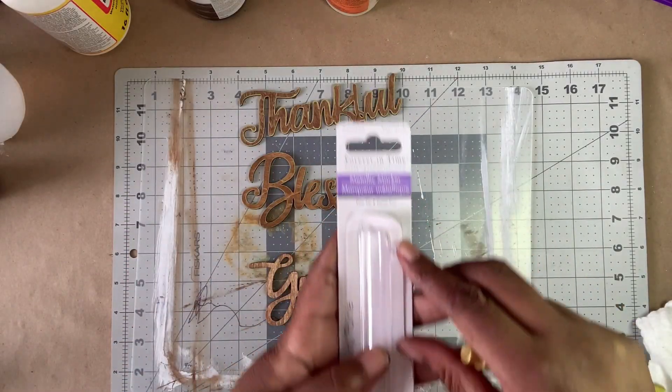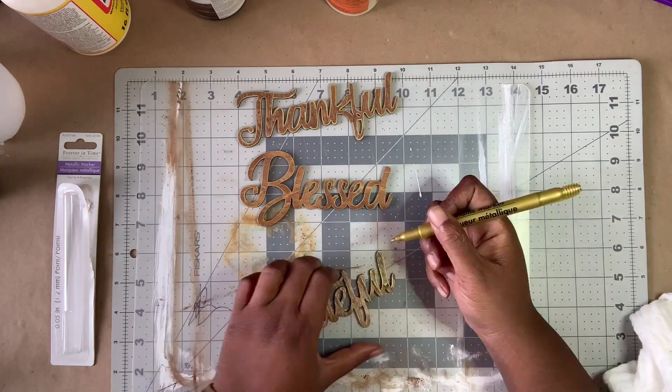While the canvas was drying, I used a gold paint pen from Dollar Tree to line the edges of the words.